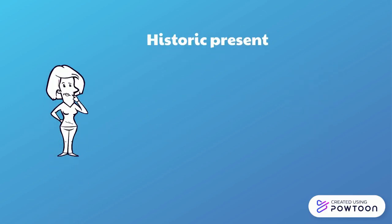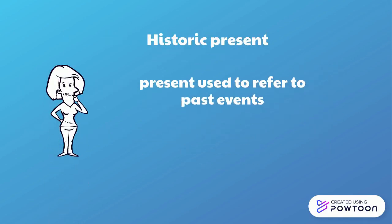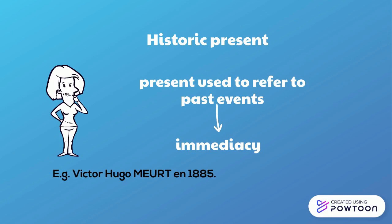The historic present is when the present is used to refer to past events in order to convey a sense of immediacy. It is more common in French than in English. For instance, 'Victor Hugo meurt en 1885' — Victor Hugo died in 1885.